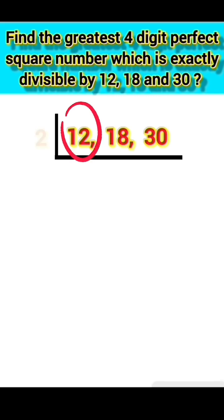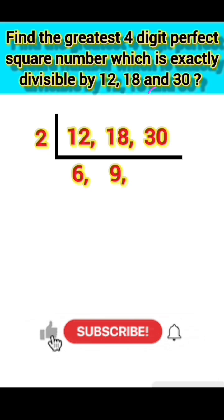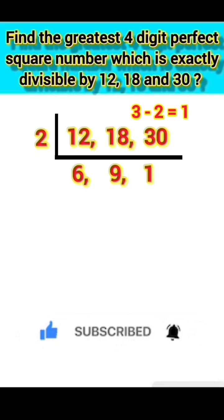12 is 2 times 6. The other number 18, we get in 2 table. Now the other number 30, last digit 0, this number is divisible by 2. First number 3, 2 ones are 2, 3 minus 2 equals 1, carry forward making it 10. 10 is divisible by 2, 2 fives are 10.